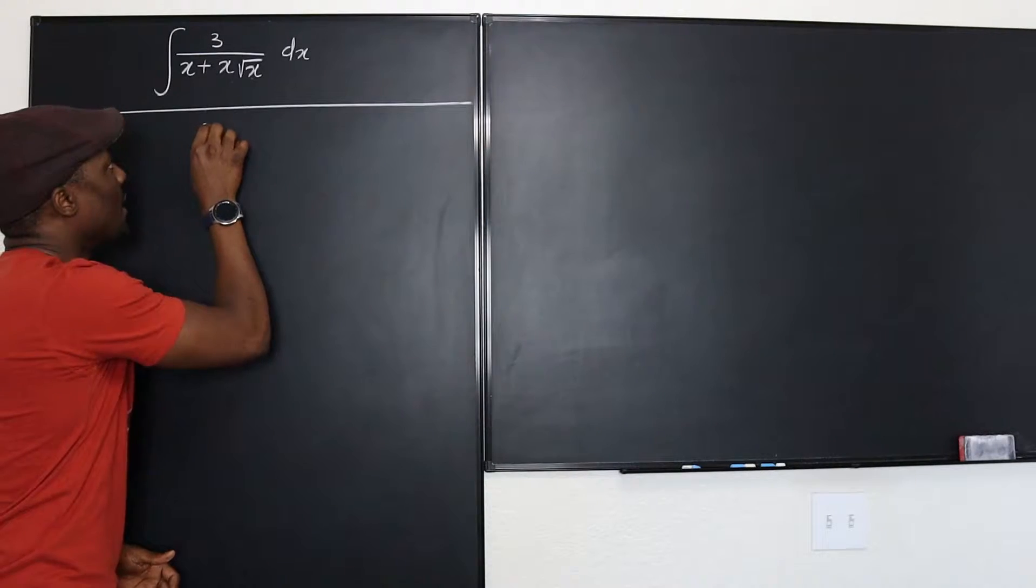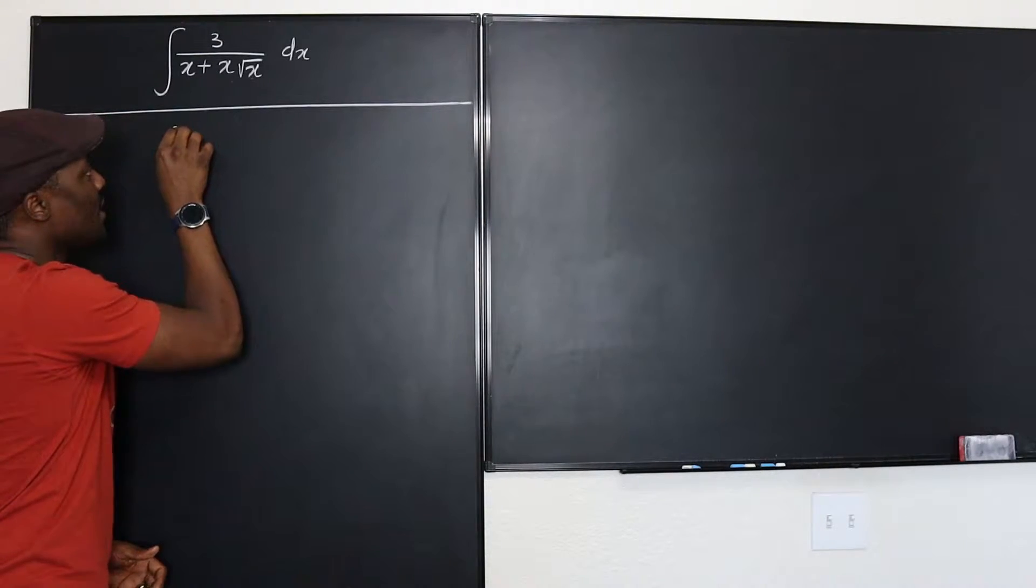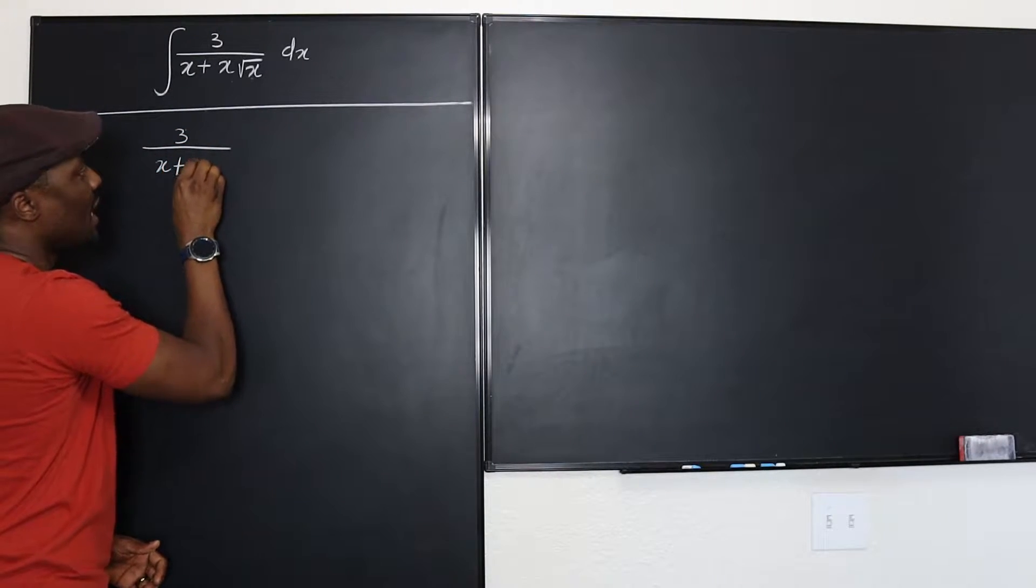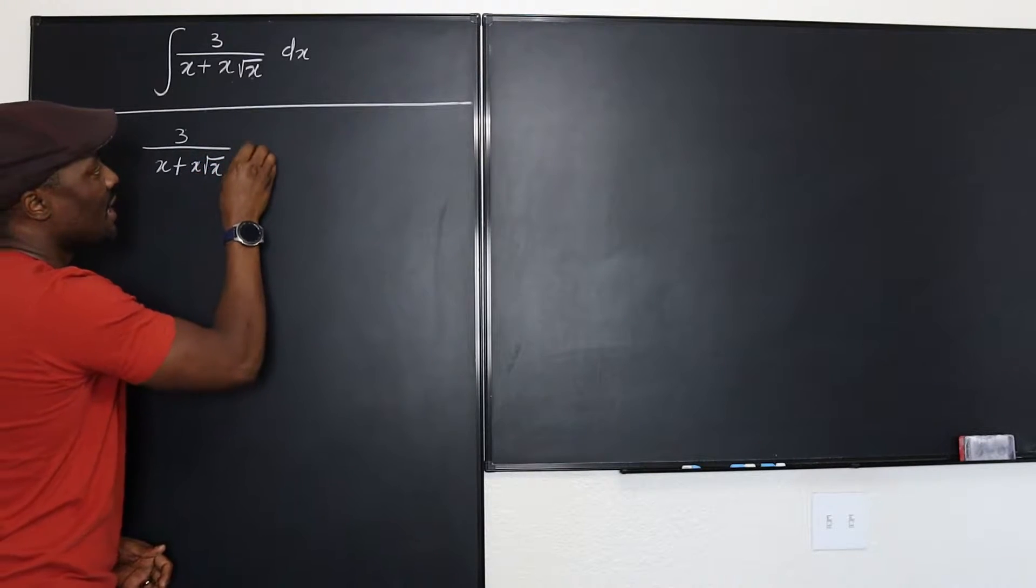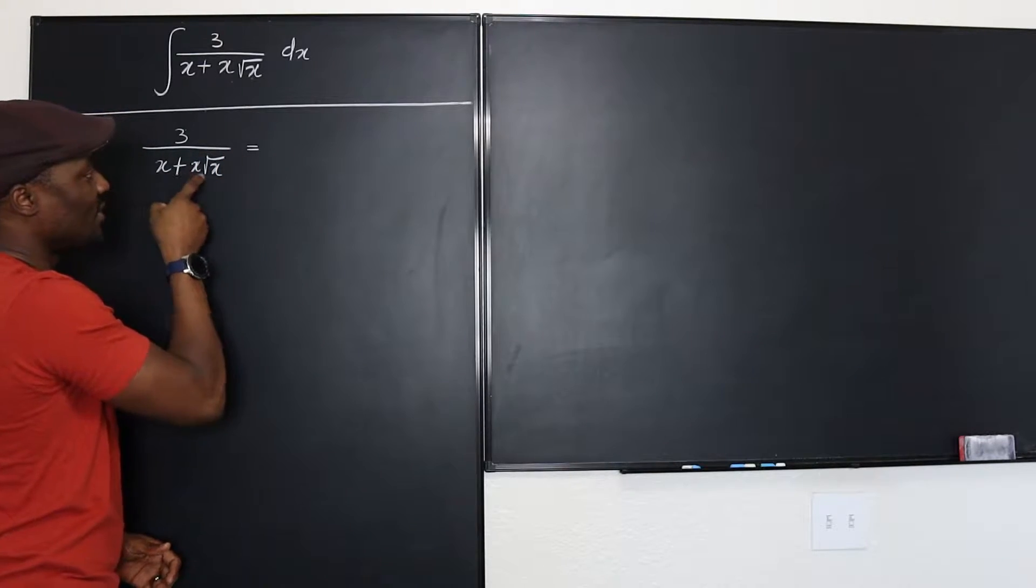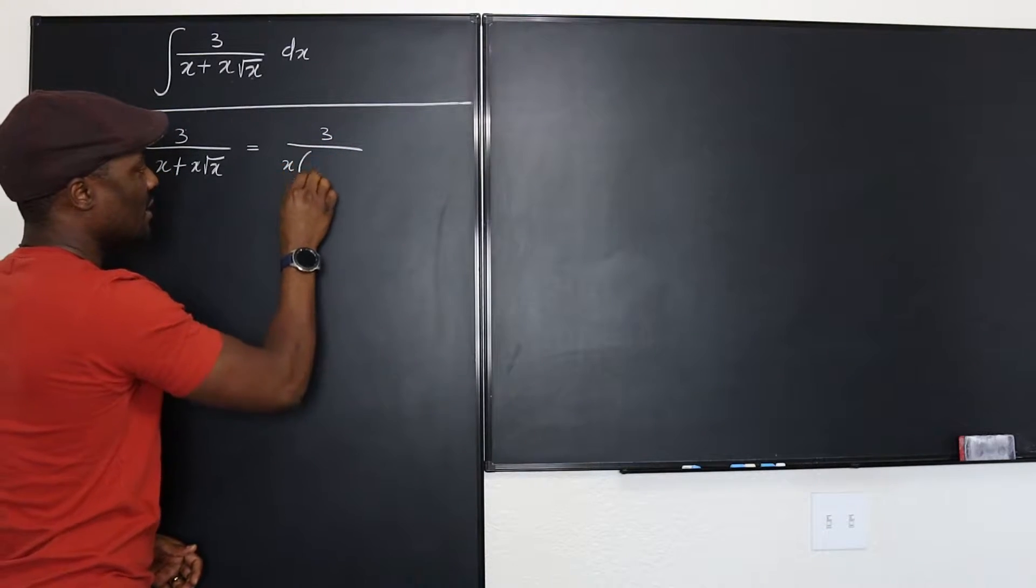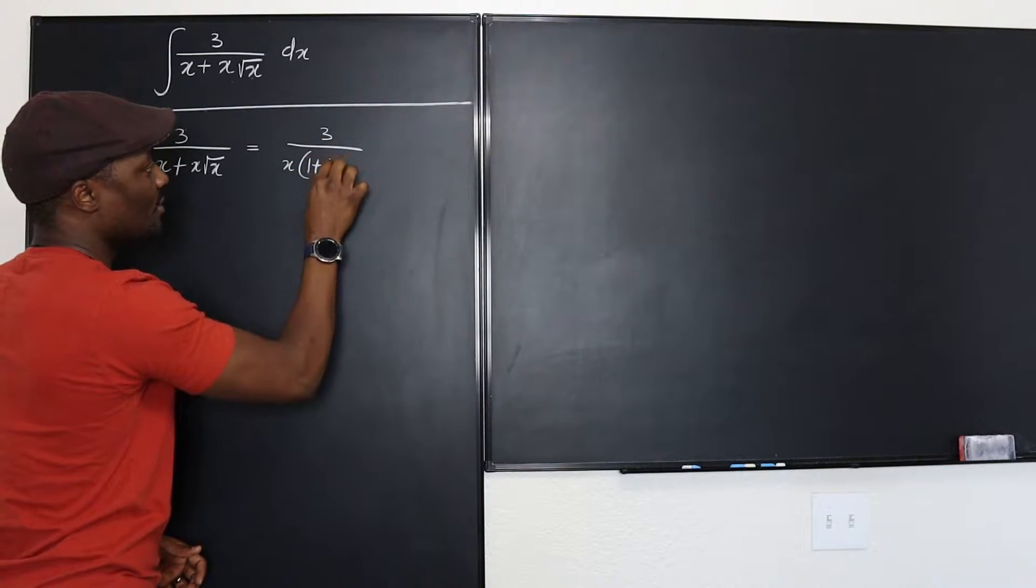3 over x plus x root x - I can factor this out. It will be 3 over x into 1 plus square root of x.